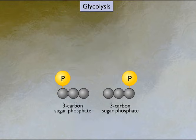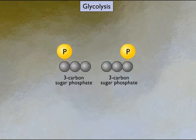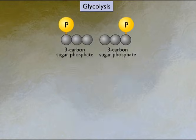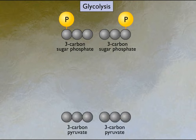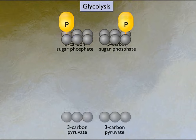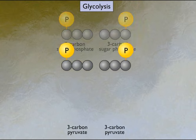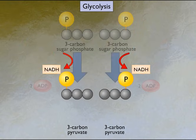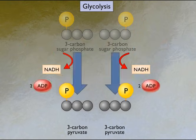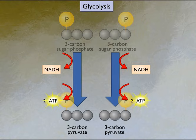Each of the three-carbon molecules is converted through a series of steps to pyruvate. During these reactions, electrons are transferred to the coenzyme NAD+ to form NADH, and ATP is formed.